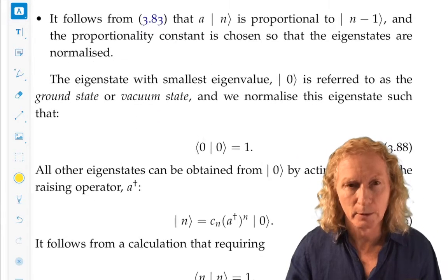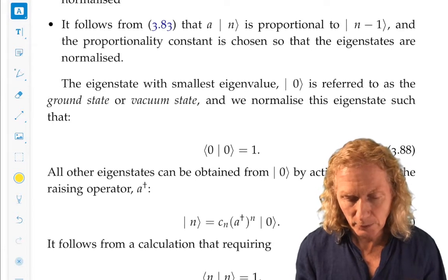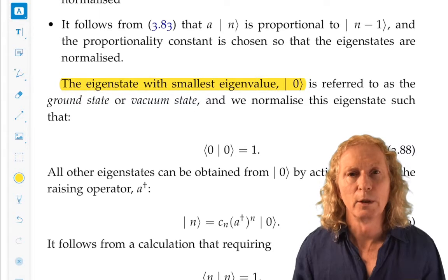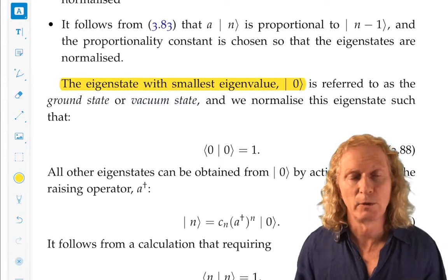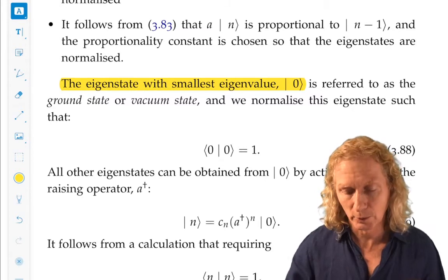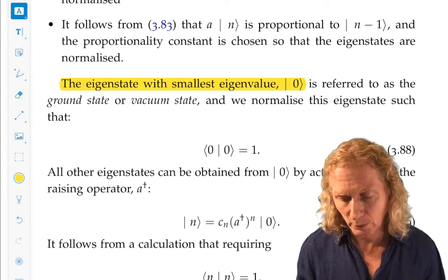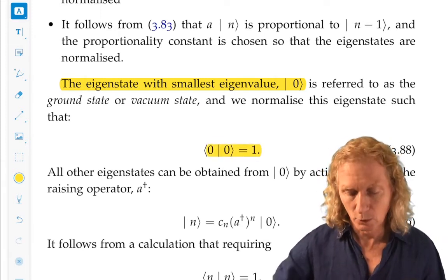A little bit of terminology. The eigenstate with the smallest eigenvalue we denote as ket 0, and that's generally called the ground state. Sometimes vacuum state is used, but we'll use the phrase ground state. And we're always going to normalize things, so the ground state is normalized to 1.